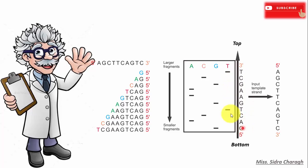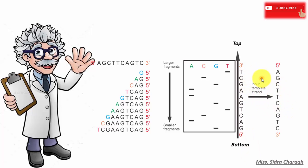Now let's understand how to interpret DNA sequencing results. Bands are arranged according to size: the smallest fragment is found at the bottom of the radiograph and the largest at the top. We read the sequence from bottom to top. The sequence read here from bottom to top is G, A, C, T, G, A, A, G, C, T — and the direction is from 5 prime to 3 prime. This is the sequence of the newly synthesized DNA strand.